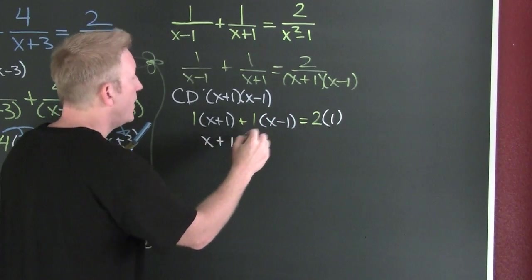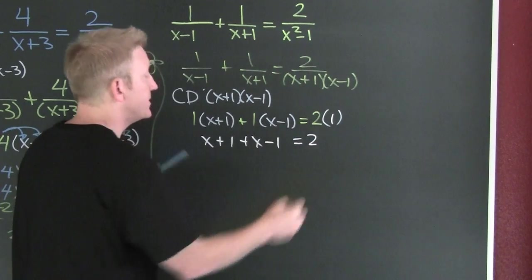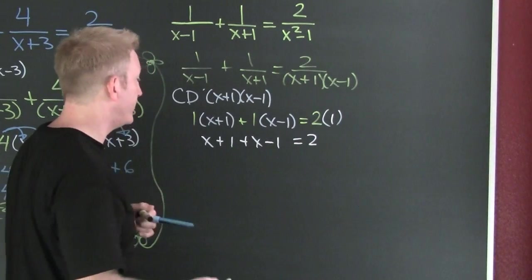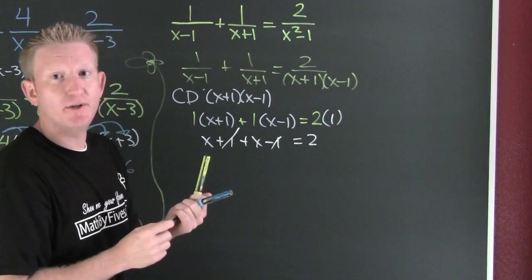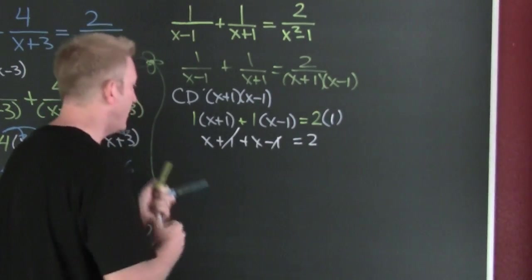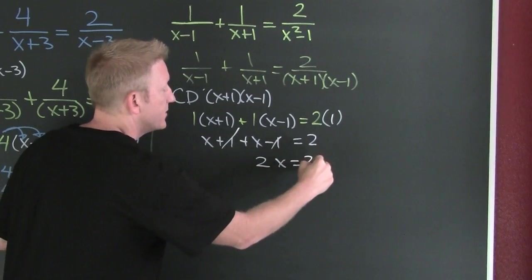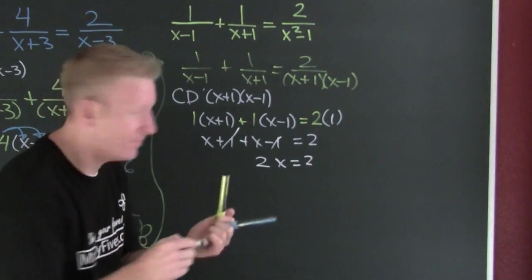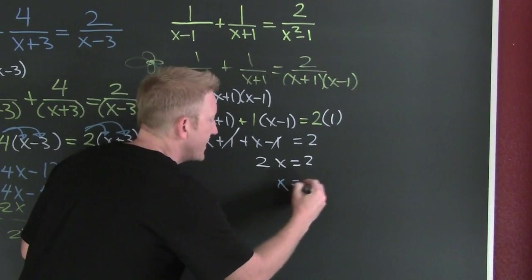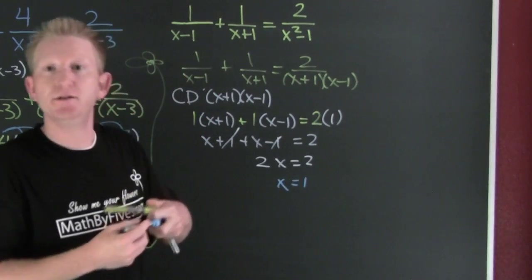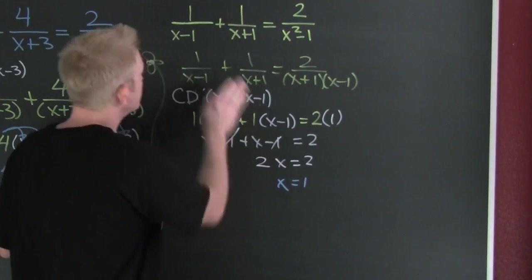So: X plus one plus X minus one equals two. The ones cancel out. X and X give me 2X equals two. Division — X turns out to be one.